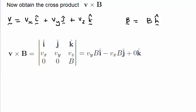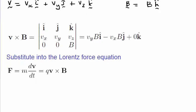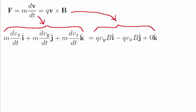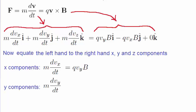All that needs to be done is to substitute this expression into the Lorentz equation. The left-hand side of this equation can be expanded into its x, y, and z components. We equate that to the right-hand side obtained from our cross product, now multiplied by the charge q. We equate the x, y, and z components of the left-hand side to their corresponding components on the right-hand side.